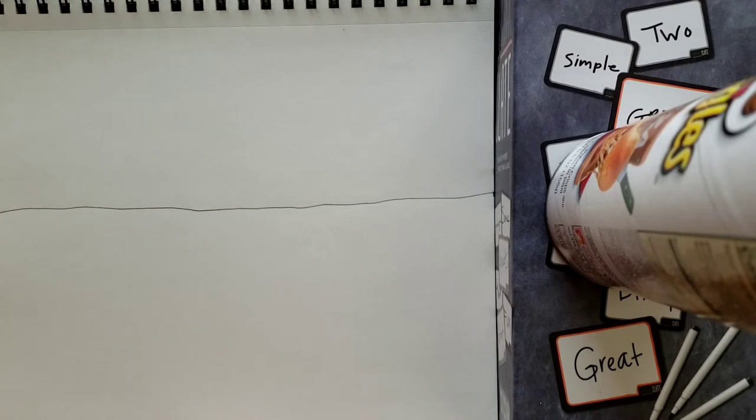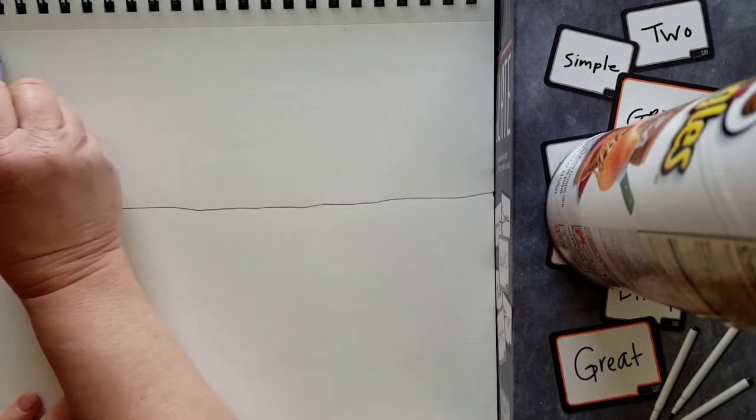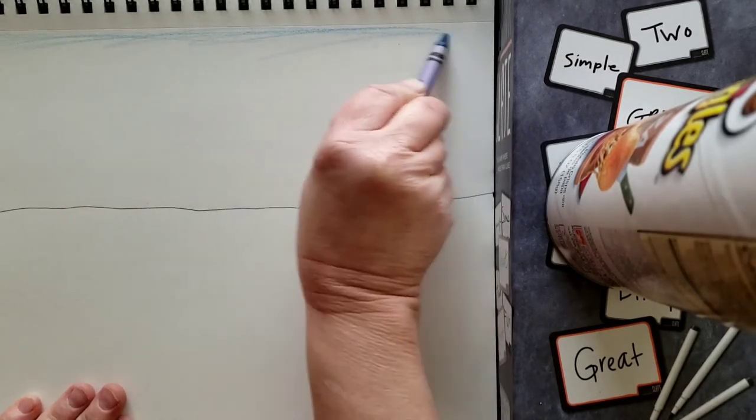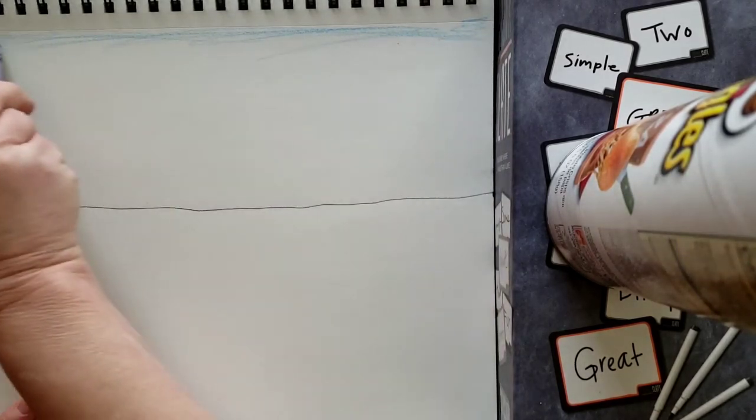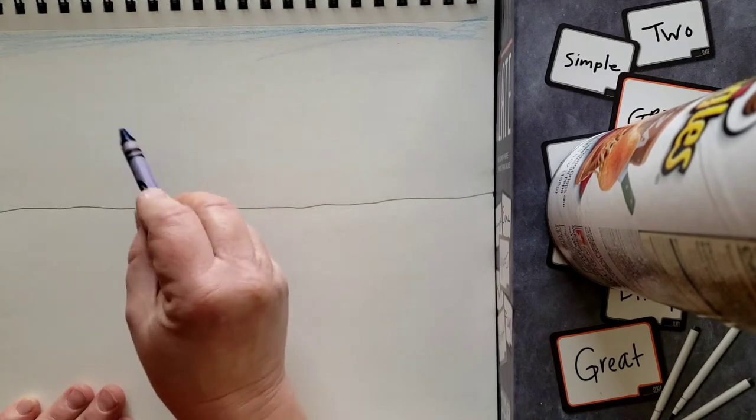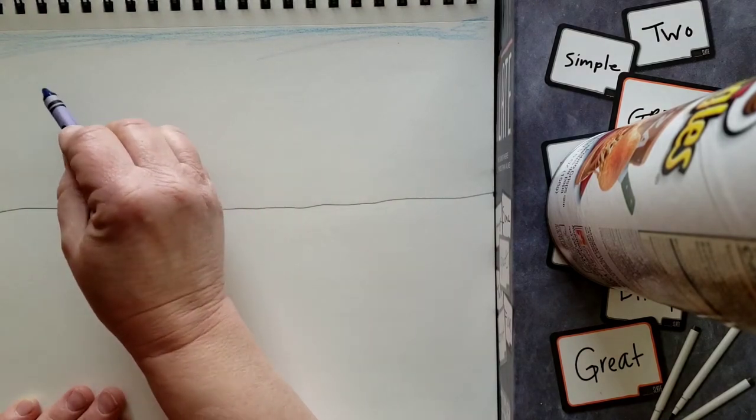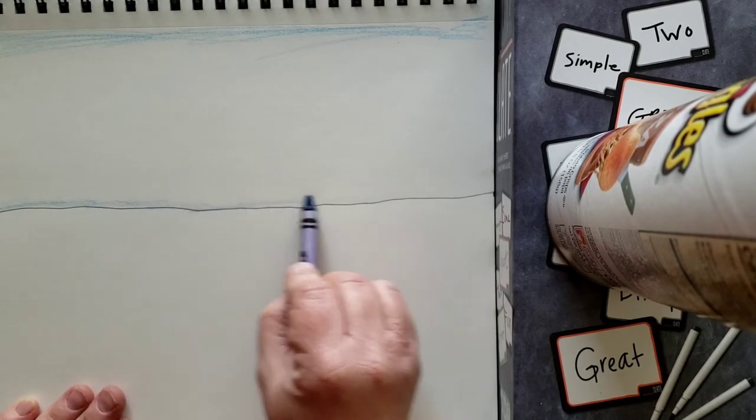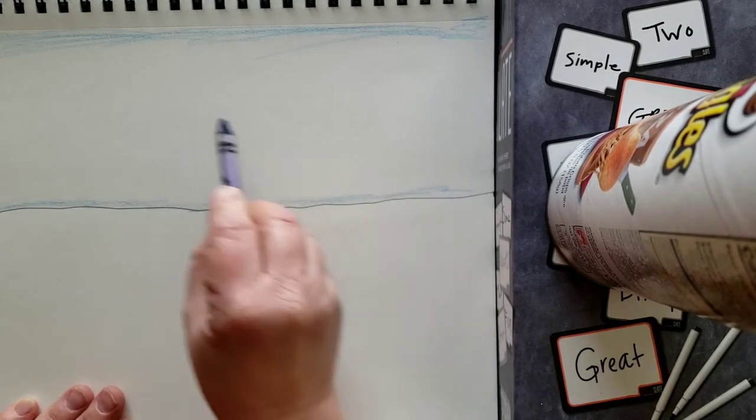So when I was a kid, kids used to always color the sky just right up here and they called that the sky because sky is up. But really, if you looked outside, you would see that the blue would come all the way to the horizon line. So you can color it all the way down here.